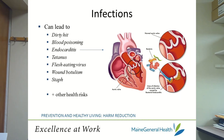The tetanus infection occurs when a tetanus bacteria enters your bloodstream. Symptoms include muscle spasms, muscle problems, and locked jaw. Tetanus is vaccine preventable and booster shots can help prevent a tetanus infection. If untreated, tetanus can be fatal.